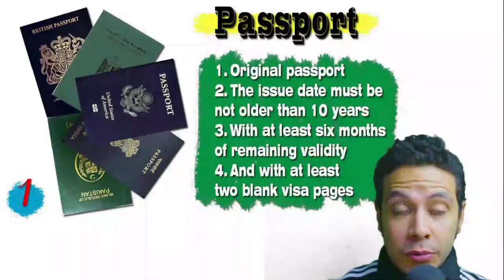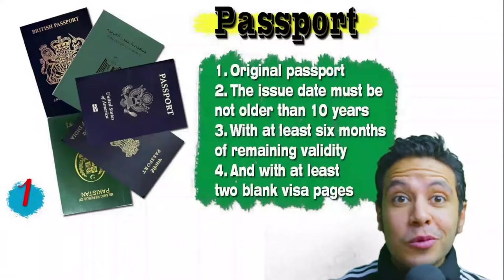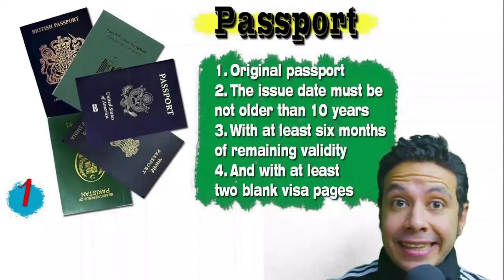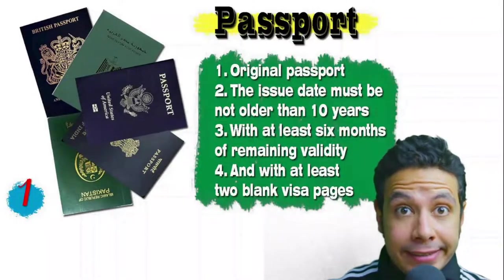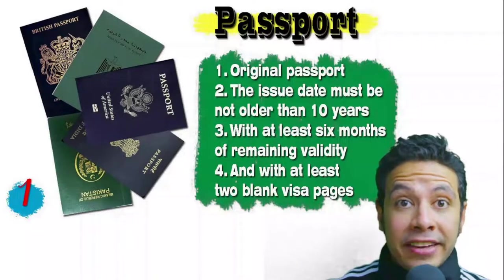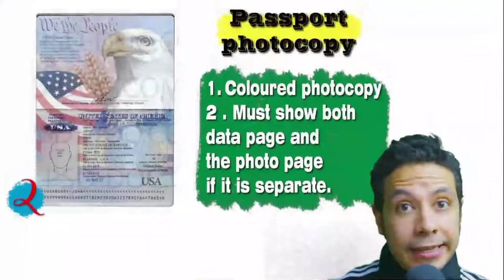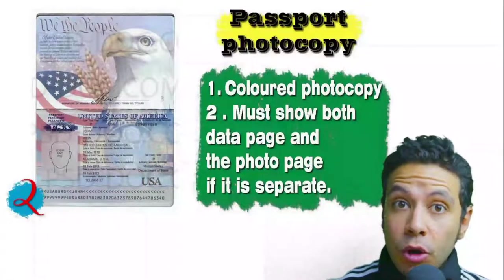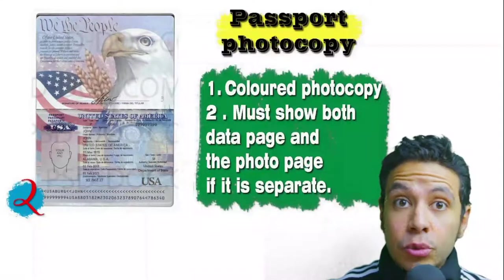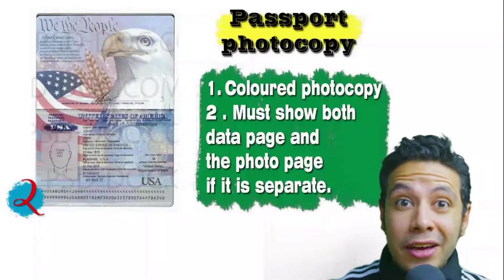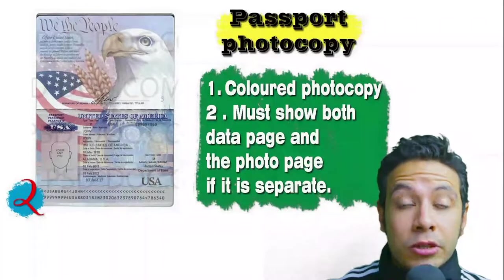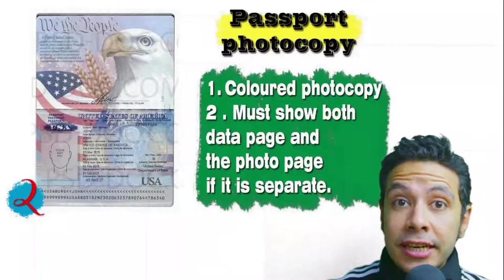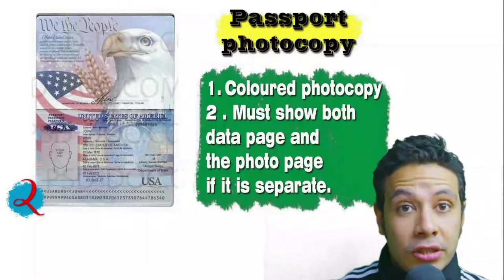Now, what are the required documents? First, your passport: it must be original, not older than 10 years, with at least six months of remaining validity and at least two blank visa pages for stamps. In many cases you will also need a passport photocopy — it might be one copy or more, preferred to be colored, with both the data page and photo page showing.